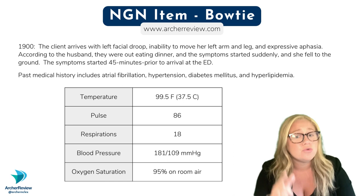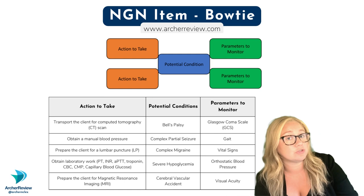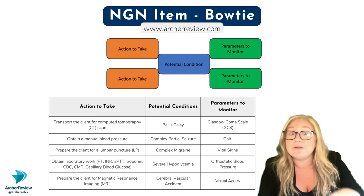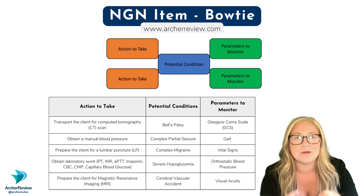Now getting over to the bow tie, here's what you're going to see: one potential condition in the middle, two actions to take on the left, two parameters to monitor on the right. This is just a really fancy drag and drop — you're dragging and dropping five different items into their respective locations. I recommend you start in the middle with what you think is going on.